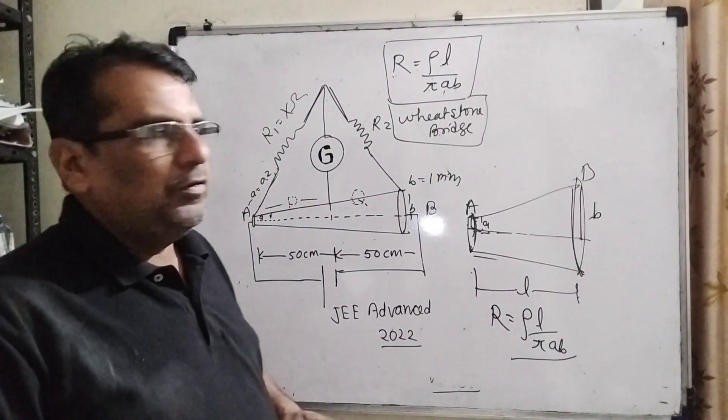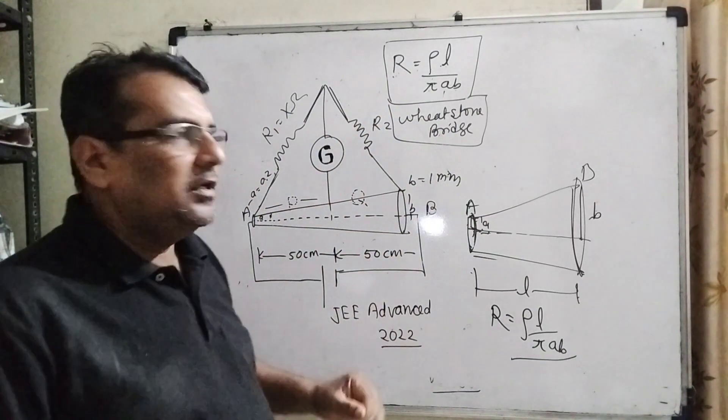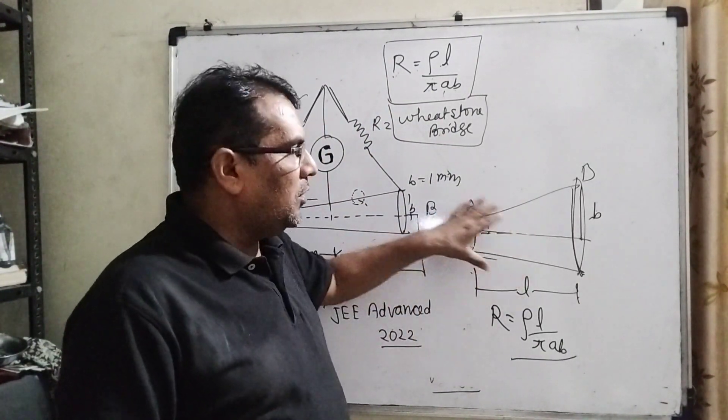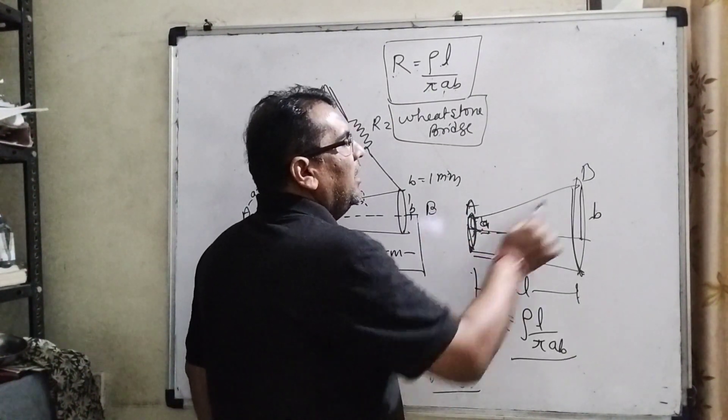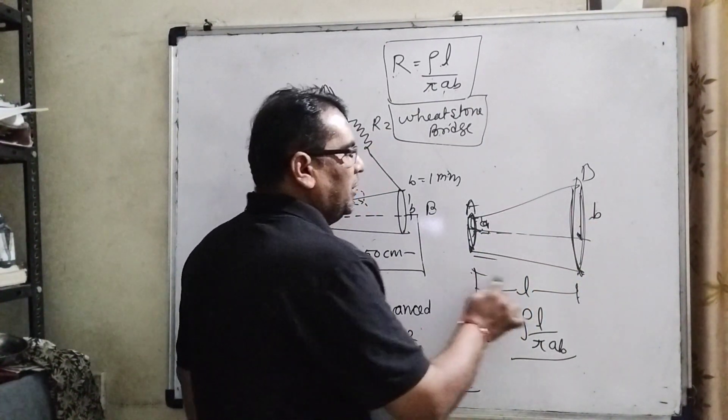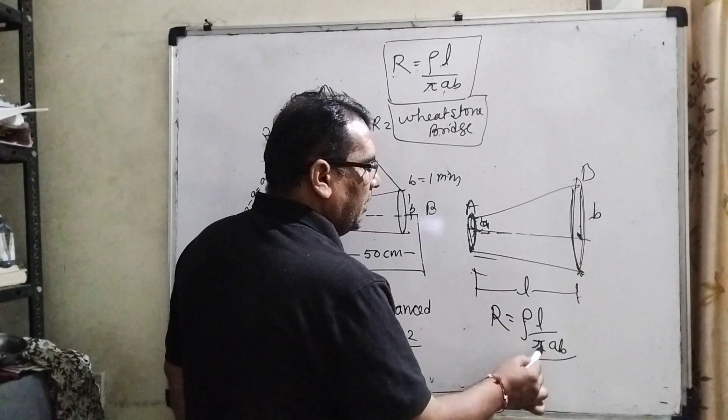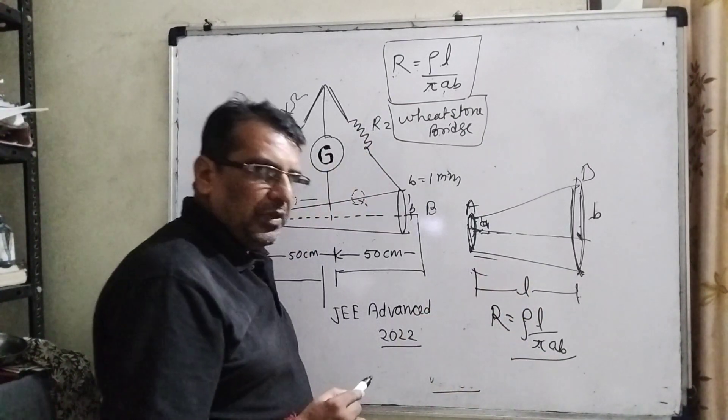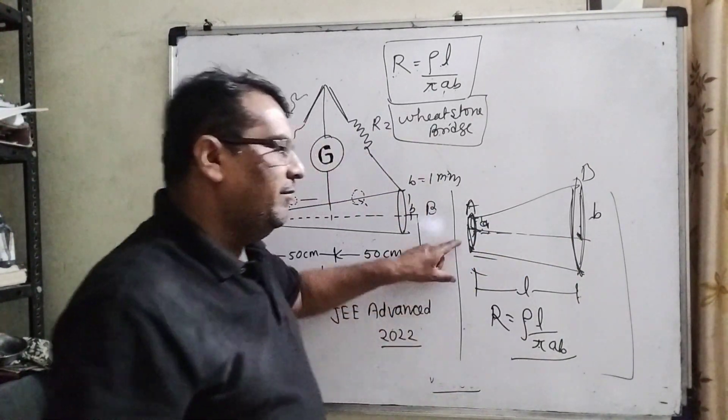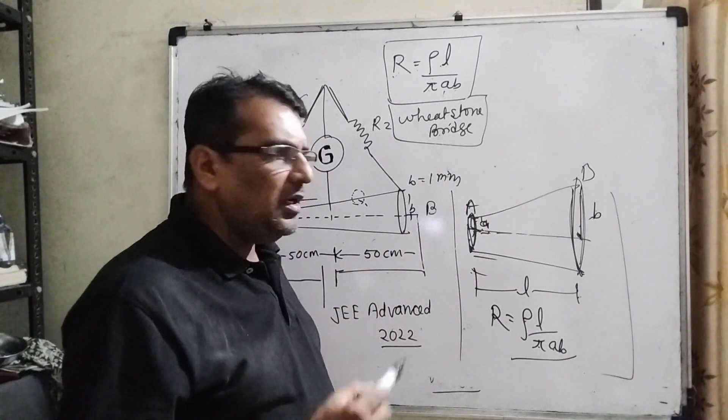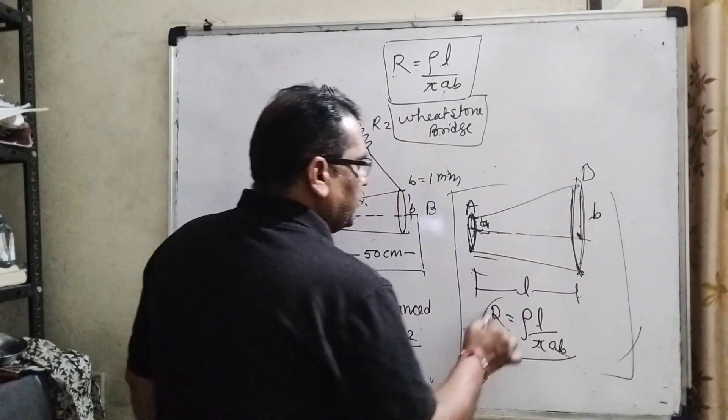Dear students, here we are using two concepts. First concept is Wheatstone bridge and second is resistance for non-uniform cross-section wire conductor. Here, let smaller cross-section radius is A and bigger cross-section radius is B and total length is L, then resistance R equal to rho (specific resistivity) times L (total length) upon pi into AB. I think most of the students know this type of question. This is relevant to H.C. Verma electric current question number 10. Later I will make this video in the next session. So here we are using this concept.